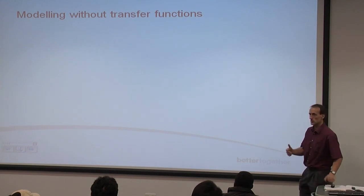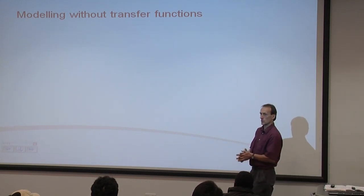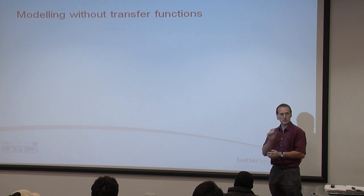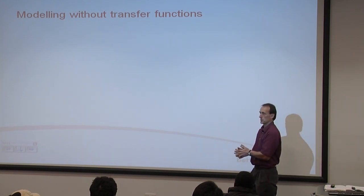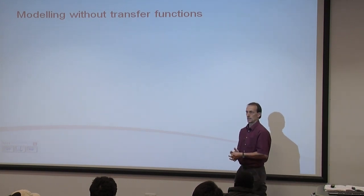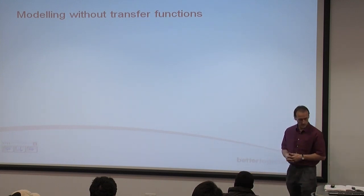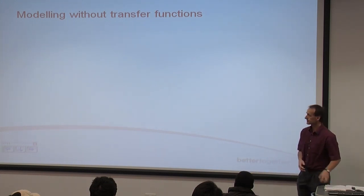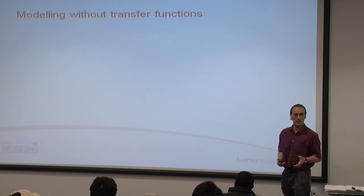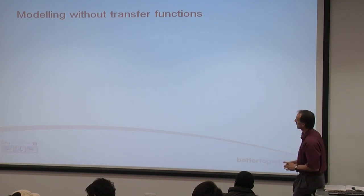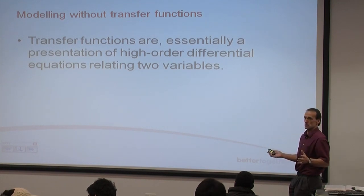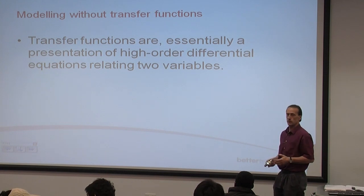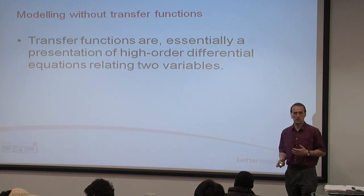Everything we've looked at so far we've assumed our systems are all linear. Every single one of those mass-spring-damper pictures — we've had a very simple linear spring: F equals kx. Not all springs are linear, so we'll see how we can deal with that as well. This is fairly lightweight today, really just a discussion about issues.